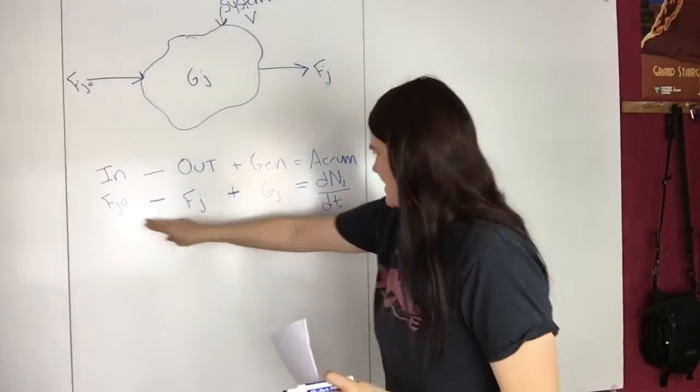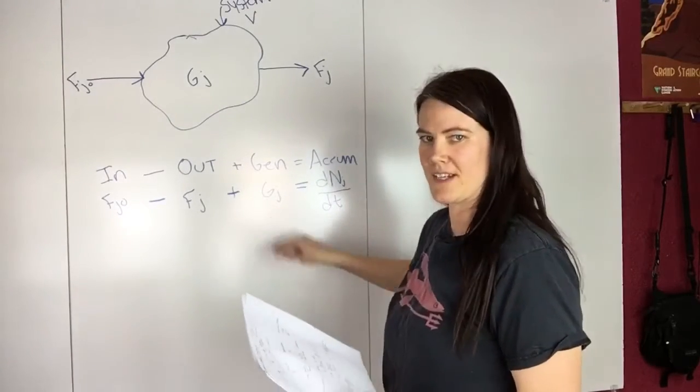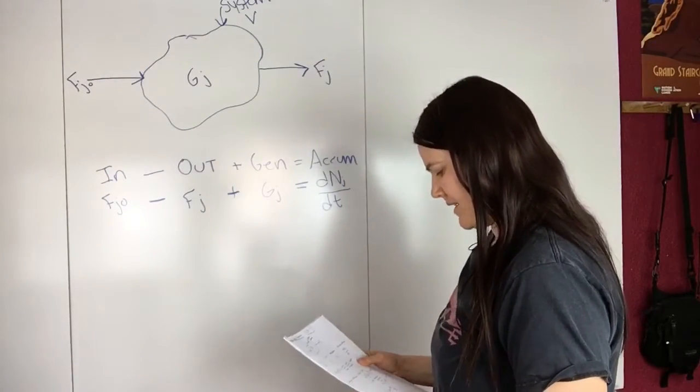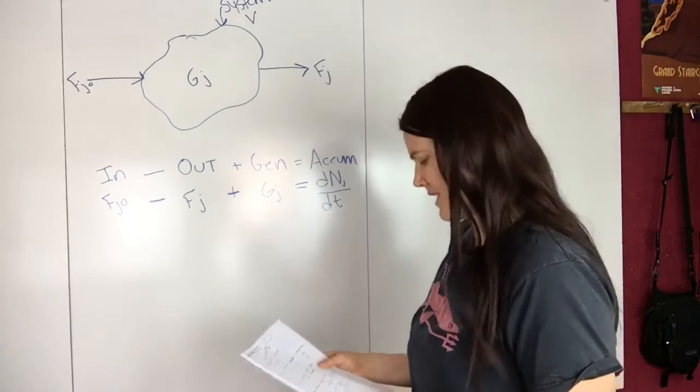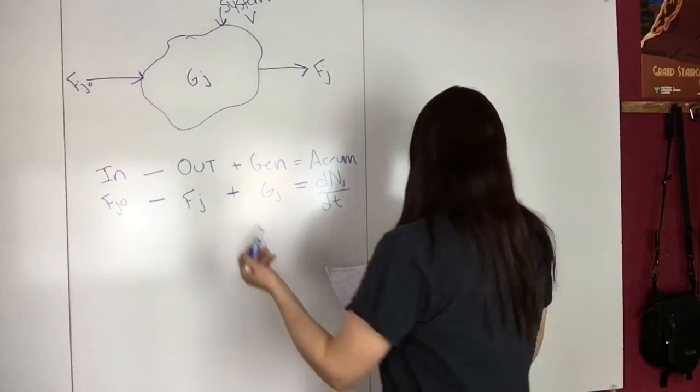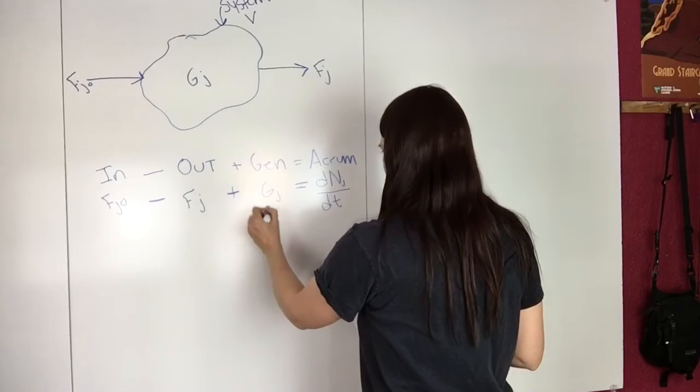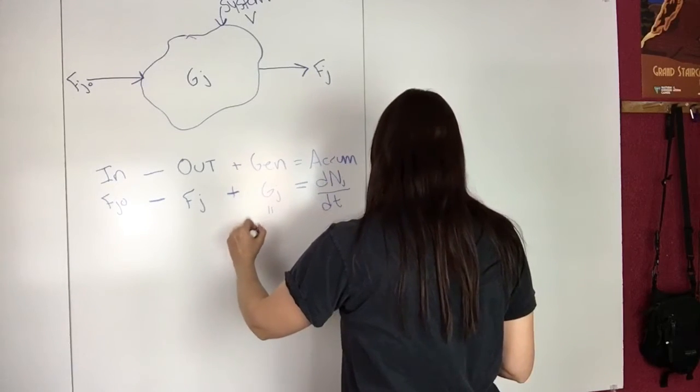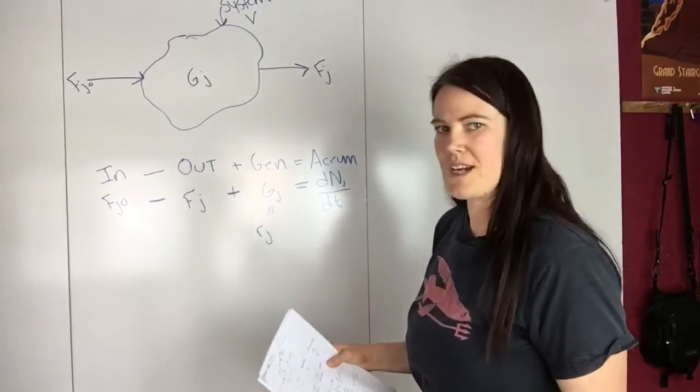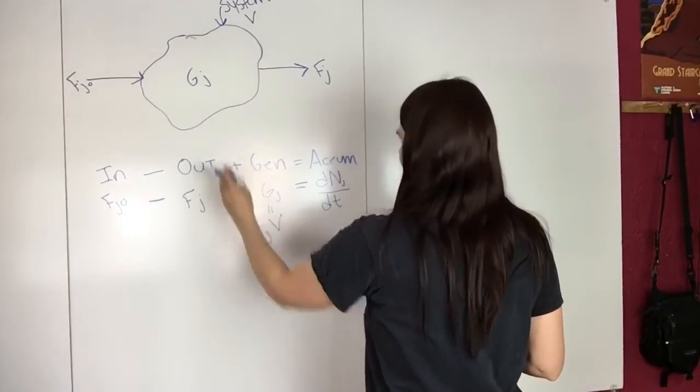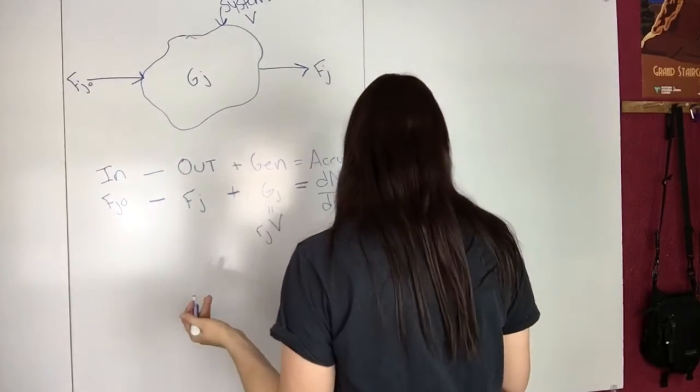So these ones are pretty apparent. The one that's not so apparent is how to calculate this generation term. So first of all, we can look at what units we would expect with that. So GJ, the generation term, would be equal to the rate of reaction times the volume. So you have the rate multiplied by the volume.